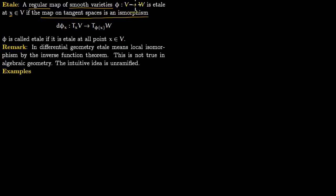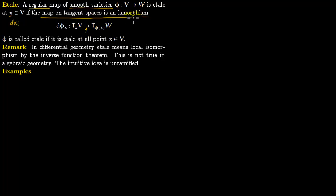So you have the tangent space of V, the tangent space of W, and the map between them at this point X. We are saying this map is an isomorphism. In most cases these tangent spaces are just affine spaces generated by some symbols like T, and this T is just a Jacobian matrix between the two spaces. When talking about an isomorphism, we are just checking that the determinant of this Jacobian is non-zero. This will become more clear as we see certain examples.